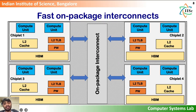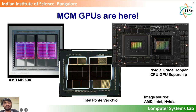By having multiple smaller dies, a GPU manufacturer can keep growing the compute capability of GPUs. Thanks to higher yield rates with smaller dies, MCM processors cost much less than equivalent monolithic chips. Processor manufacturers are fast moving to multi-chip or chiplet design — AMD, Intel, and NVIDIA are already on the MCM bandwagon.